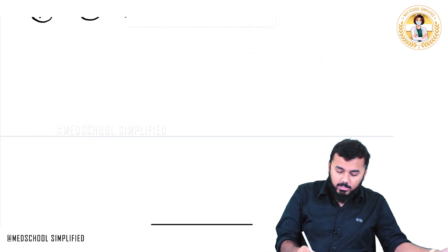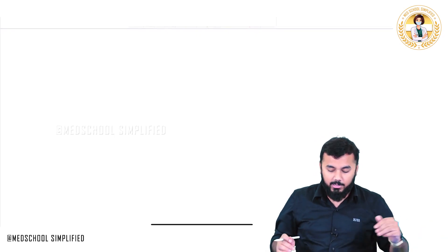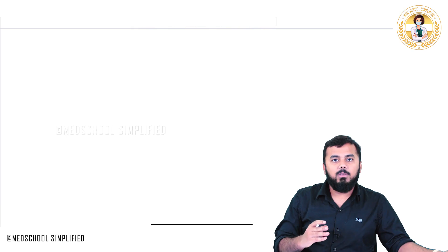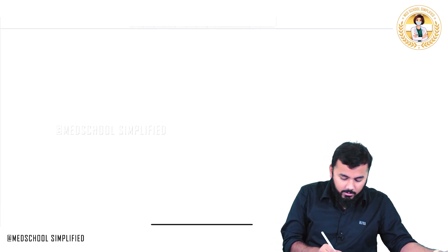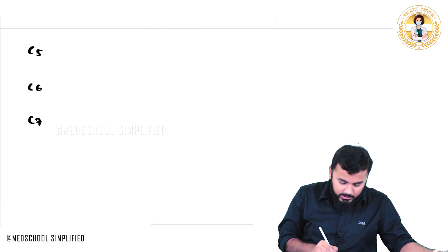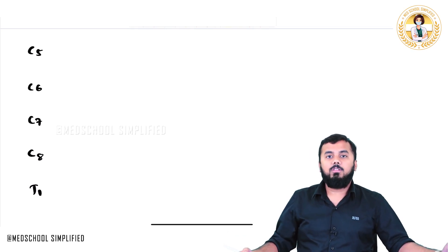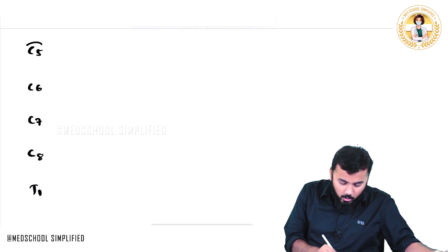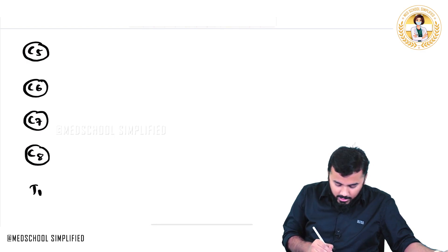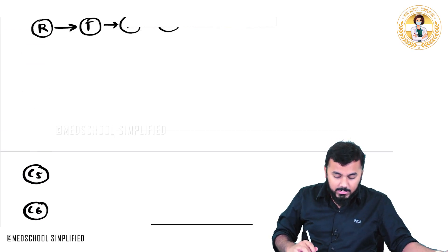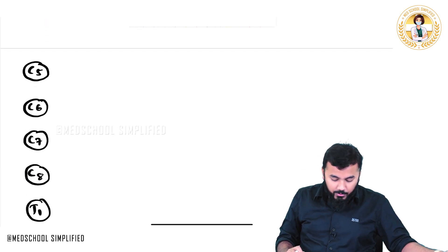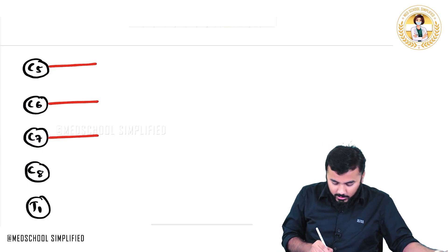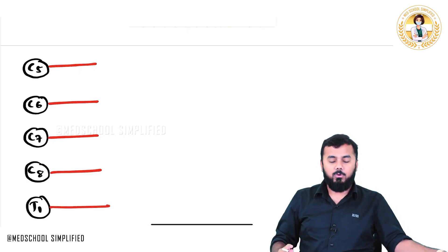Now let us draw the brachial plexus. Brachial plexus basically originates from spinal segments C5 to T1. These are not vertebral segments — these are spinal segments. From each spinal segment, a root comes out: C5 root, C6 root, C7 root, C8 root, and T1 root.